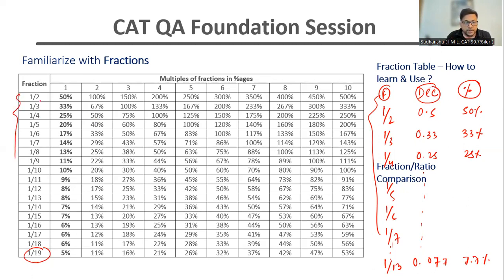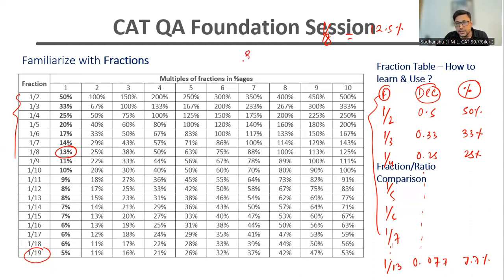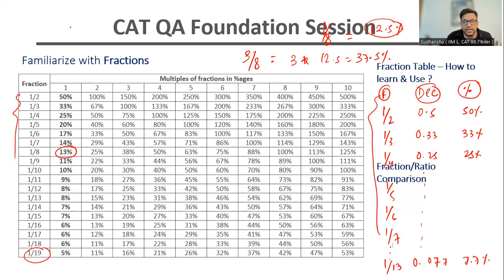So, 1 by 2, 1 by 3 — that's the first step. Once I know, for example, 1 by 8, which is approximately 12.5%, then calculating anything associated with 1 by 8 becomes very easy. For example, 3 by 8 — all I have to do is 3 into 1 by 8 is 12.5, so 3 into 12.5 is 37.5%. Similarly, if I have to calculate 5 by 8, that becomes 5 into 1 by 8. 1 by 8 in percentage is 12.5, so 5 into 12.5 will become 62.5%. You can similarly calculate many fractions.